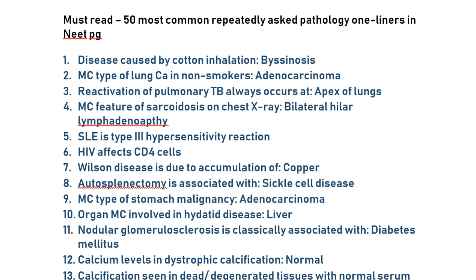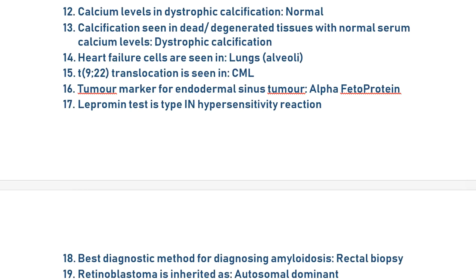Most of these one-liners you are aware of, but I just thought I'd quickly brush through them so you won't miss any common points asked in exams. Most common type of stomach malignancy is adenocarcinoma. Organ most commonly involved in hydatid disease is the liver. Nodular glomerulosclerosis is classically associated with diabetes mellitus. Calcium levels in dystrophic calcification are normal — calcification seen in dead or degenerative tissues with normal serum calcium levels is called dystrophic calcification.